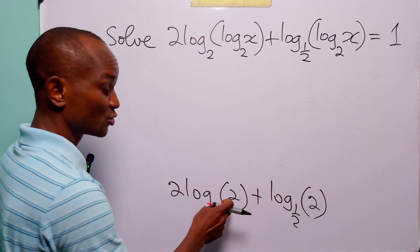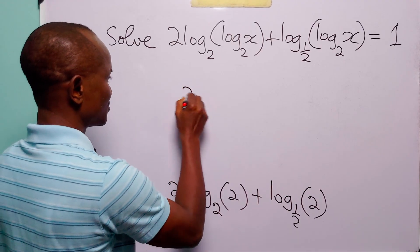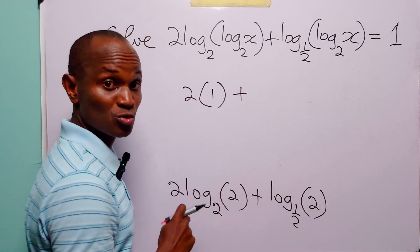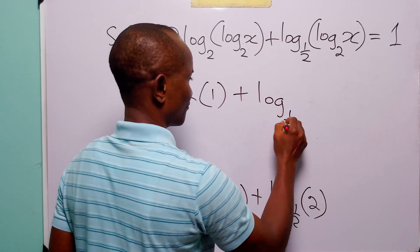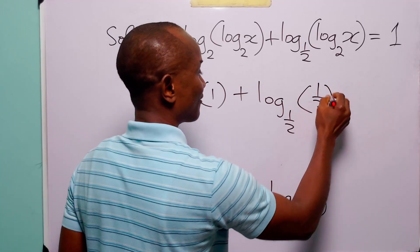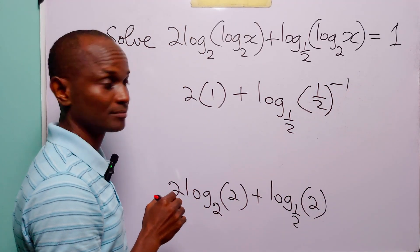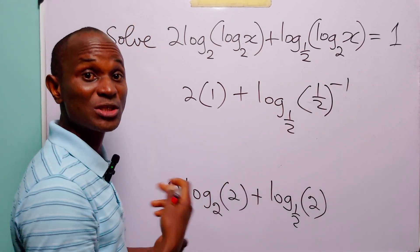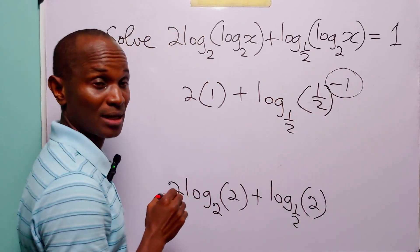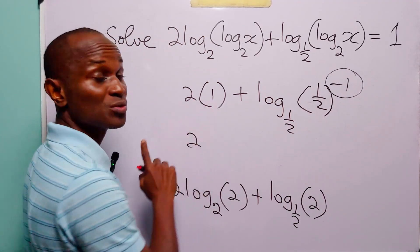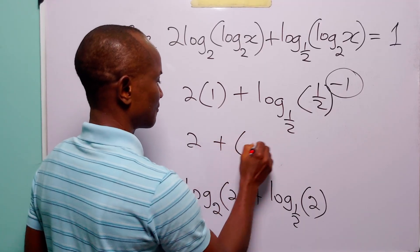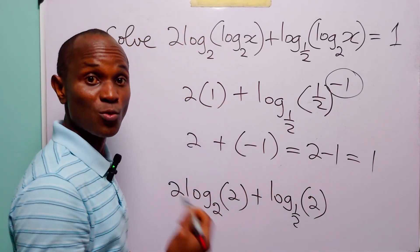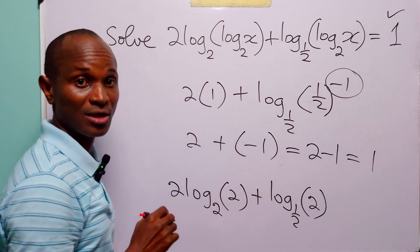We know that log base 2 of 2 is equal to 1, so this is 2 times 1. Now we can write 2 as one-half to the power minus 1, so we have log base one-half of one-half to the power minus 1, which equals minus 1. So we have 2 plus minus 1, which equals 1 — which is exactly what we have on the right-hand side of the equation.